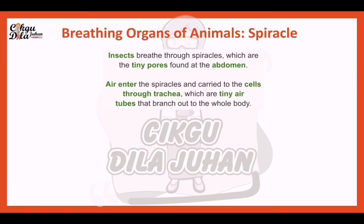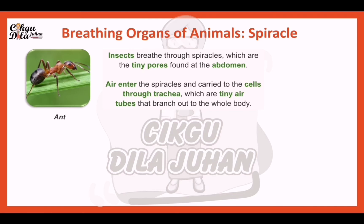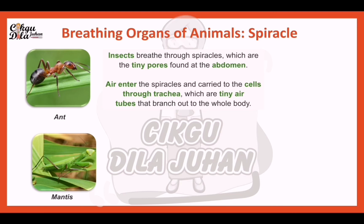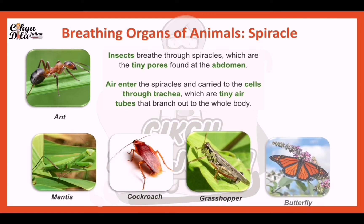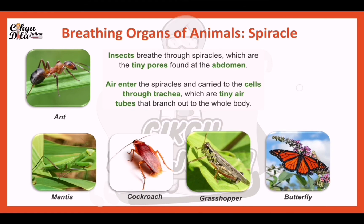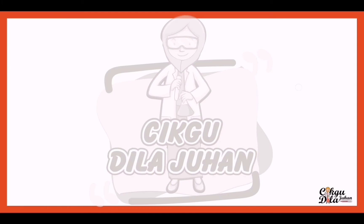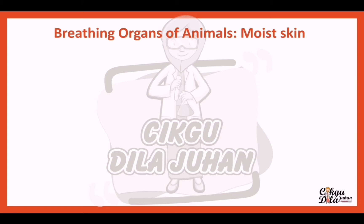Insects breathe through spiracles, which are tiny pores found at the abdomen. Air enters the spiracles and is carried to the cells through the trachea, which are tiny air tubes that branch out to the whole body. Examples of animals that breathe through spiracles include ant, mantis, cockroach, grasshopper, butterfly, and caterpillar.